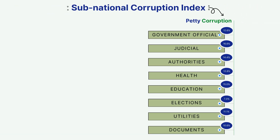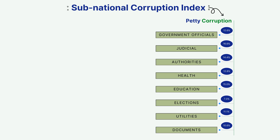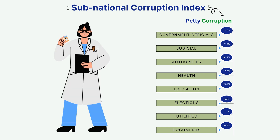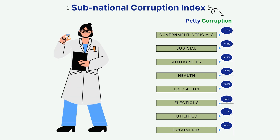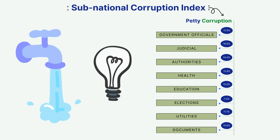Petty corruption, defined as the everyday abuse of entrusted power by public officials, is captured by eight dimensions, including experienced corruption in healthcare, in education, or in gaining access to basic utilities.